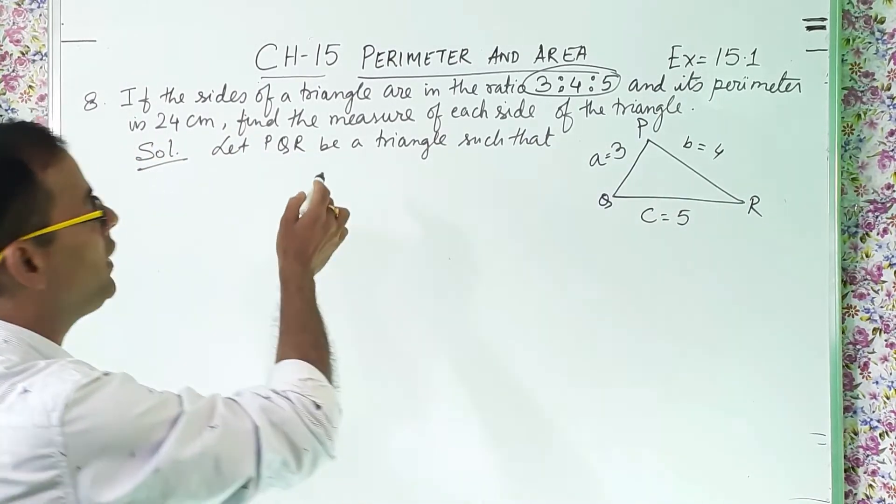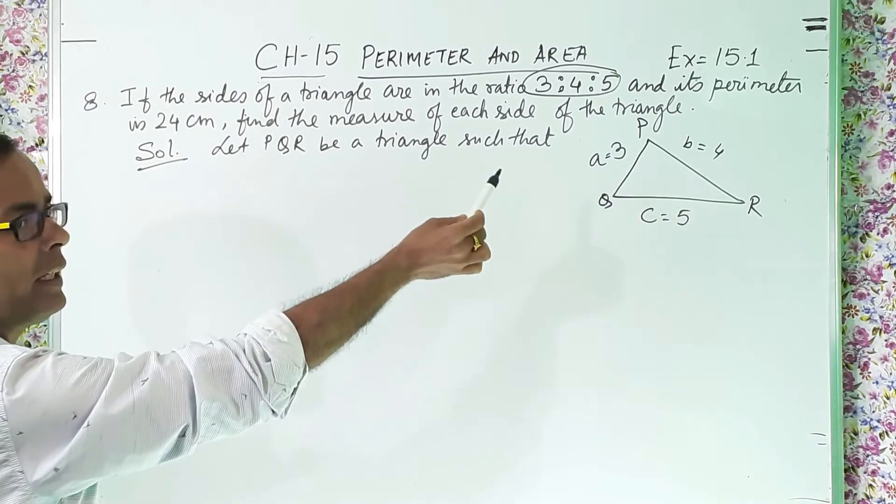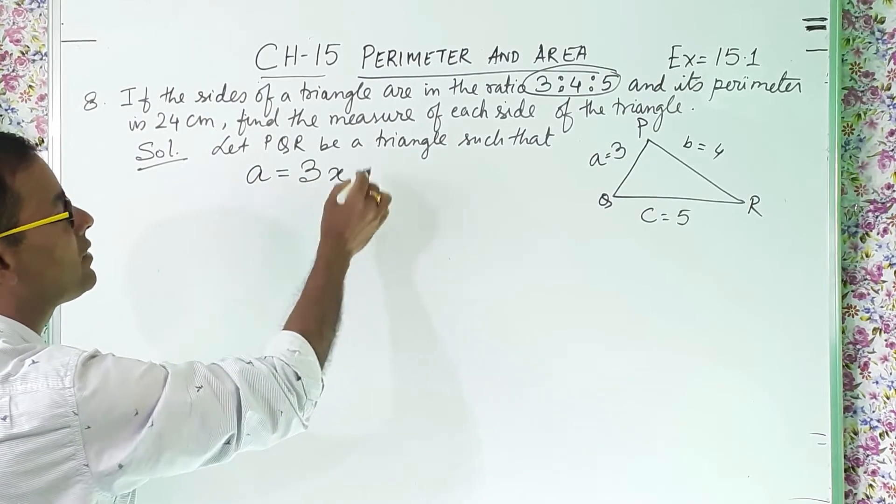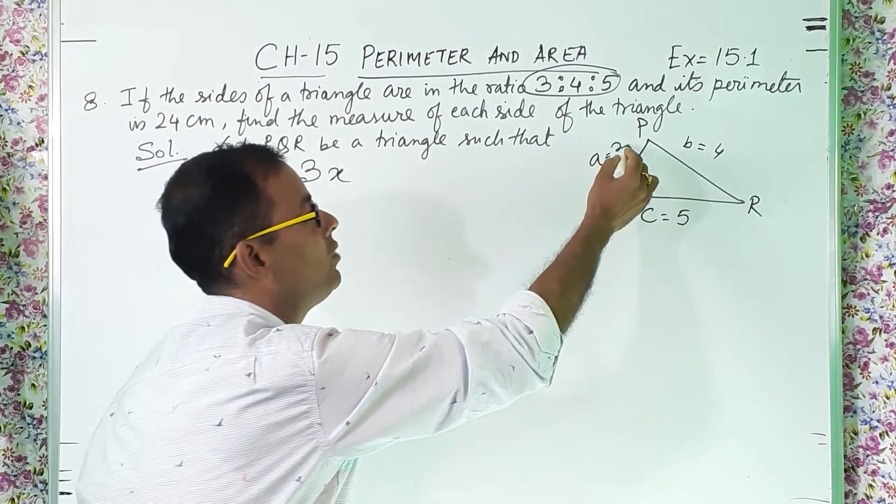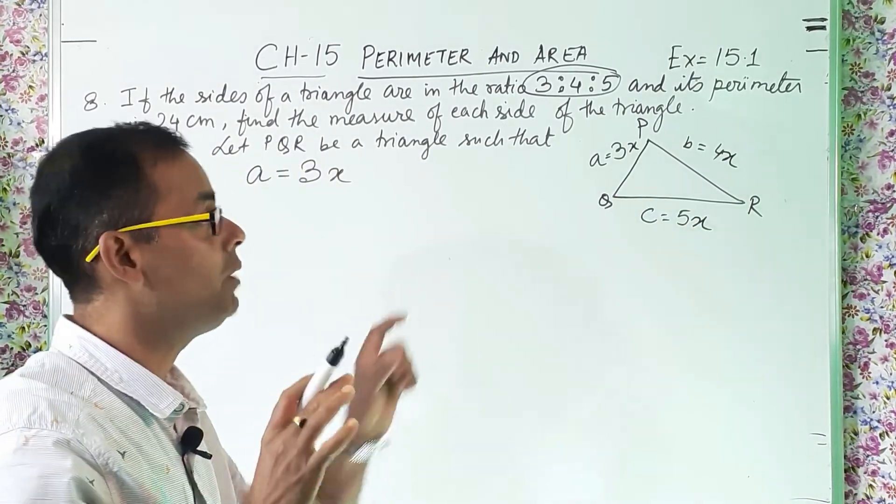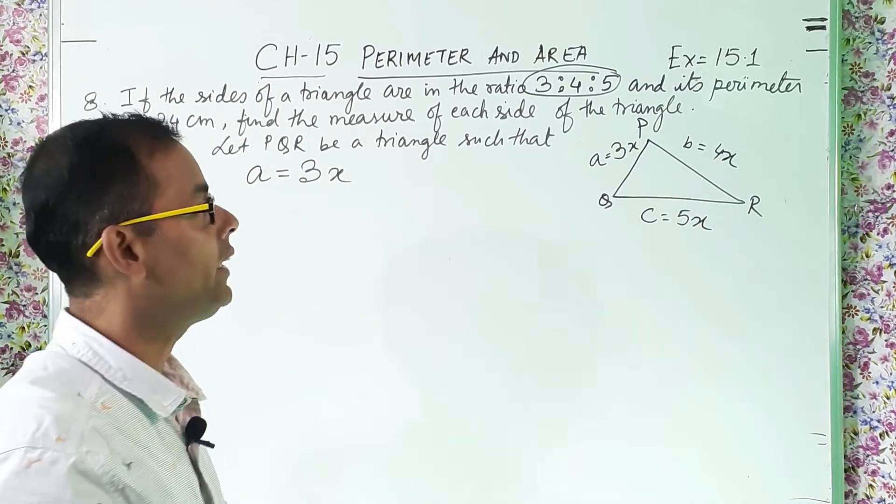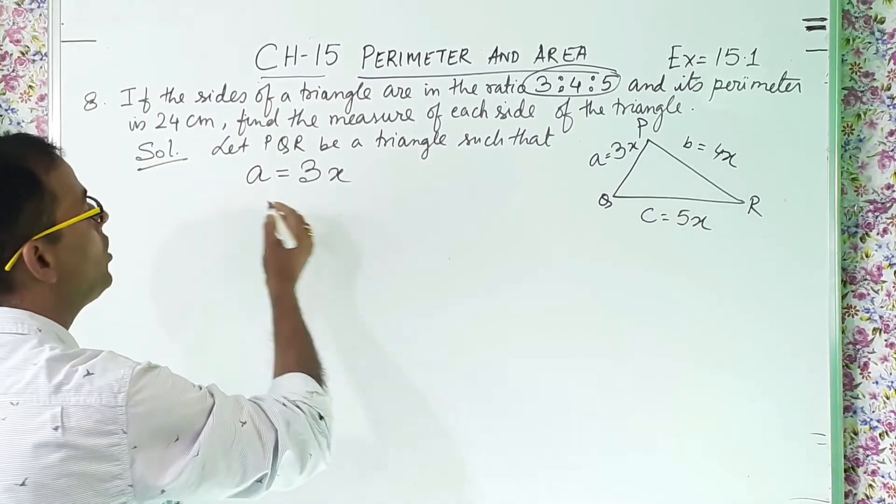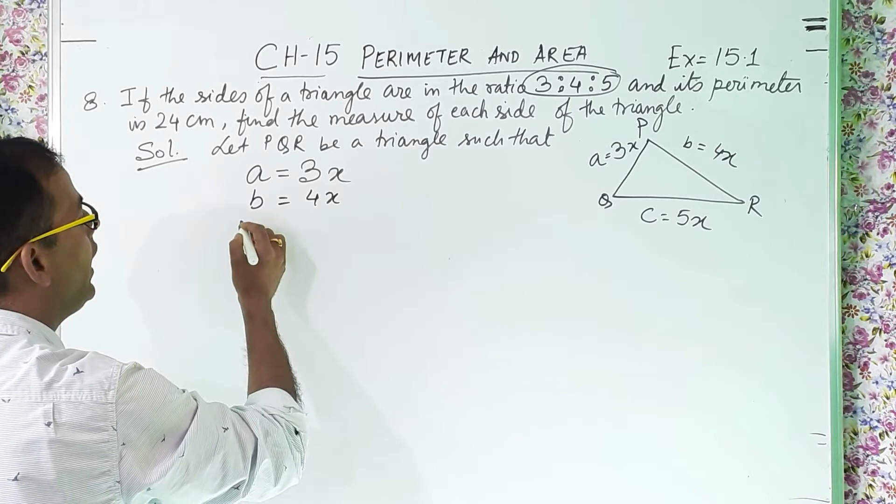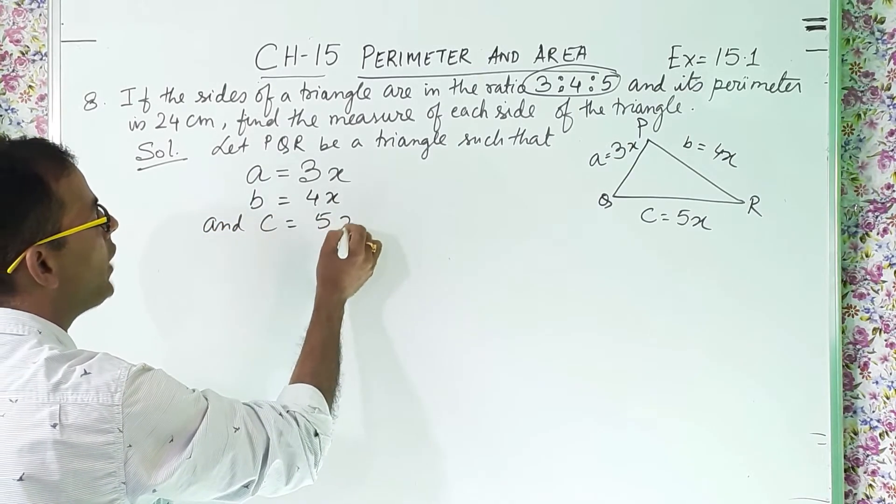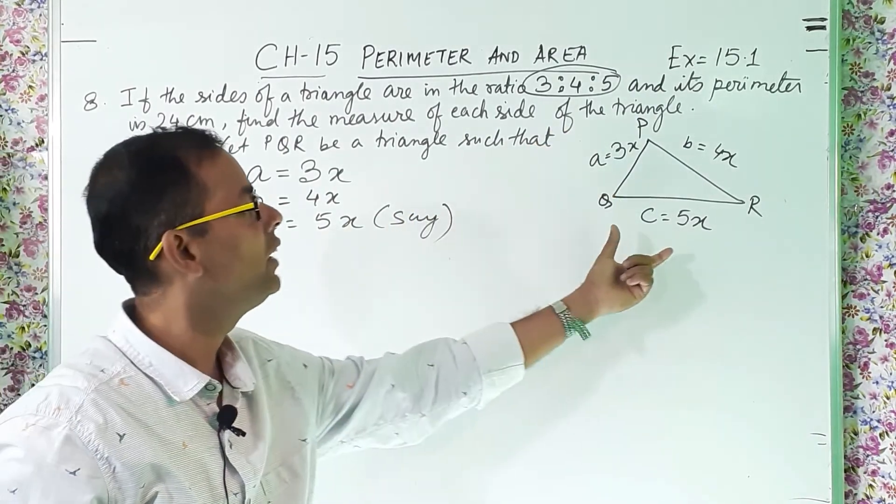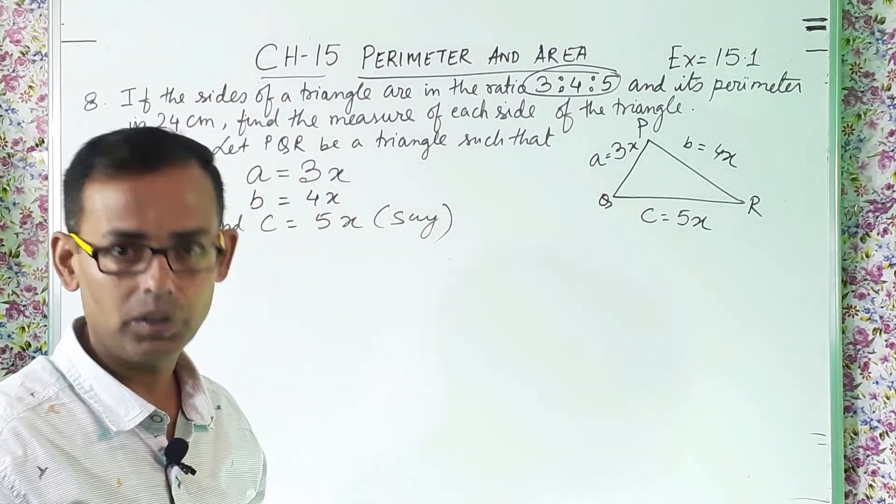Now when we will express this one here, how we will write? Let PQR be a triangle such that small a equal to 3x. Understanding or not? So this side will be 4x. And the third one will be 5x. You cannot keep it only 3, only 4, only 5. You can take x, you can take y, you can take z. So a is equal to, small b is equal to 4x, and small c is equal to 5x. Same. Clear? Like this way. That means one side is 3x, another side is 4x, another side is 5x.